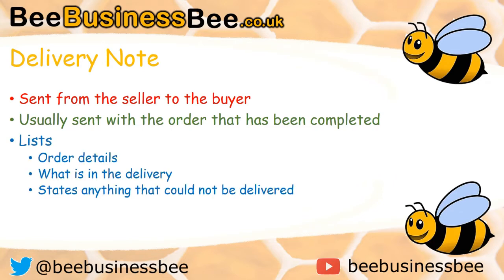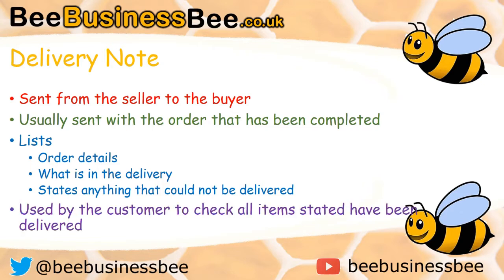The delivery note will list the order details and tell you what you're going to find in the order. It may also state anything that couldn't be included — for example, an item that couldn't be delivered, or a lesser quantity, such as if you ordered 10 but they could only send 8. It's normally used by the customer to check the order is correct, and if not, to query the discrepancy.